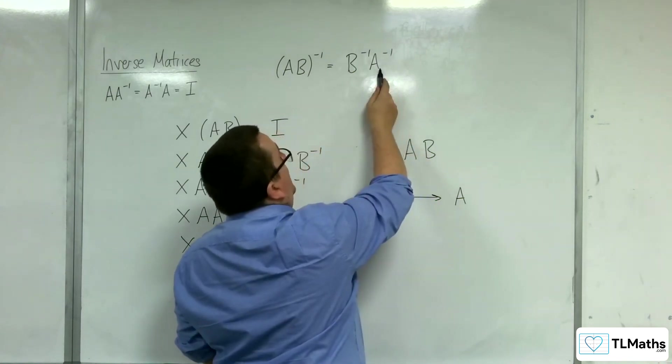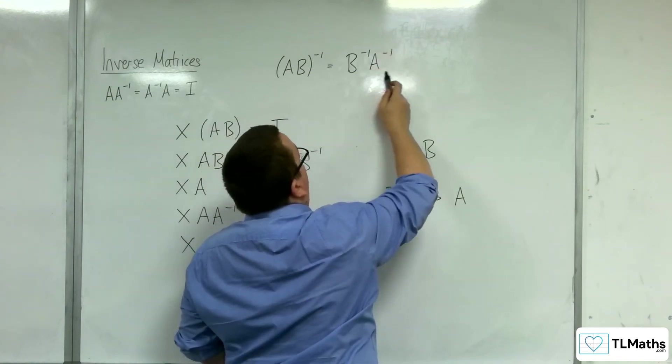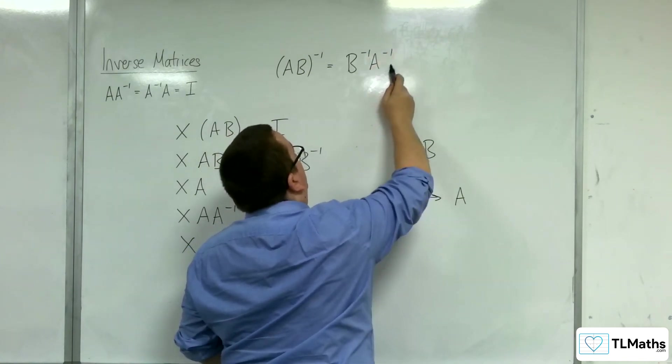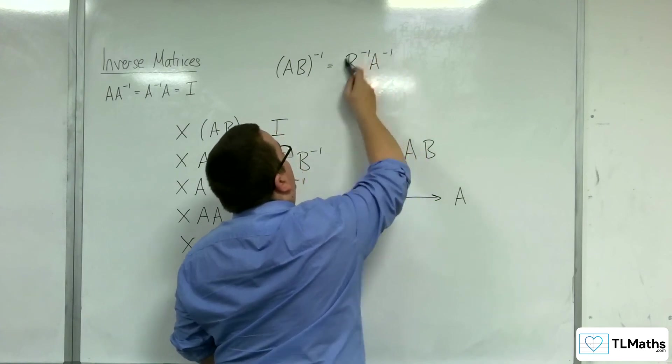And that's why it's this way round. Because the A^(-1) is on the right-hand side, you're untangling A first, and then untangling B.